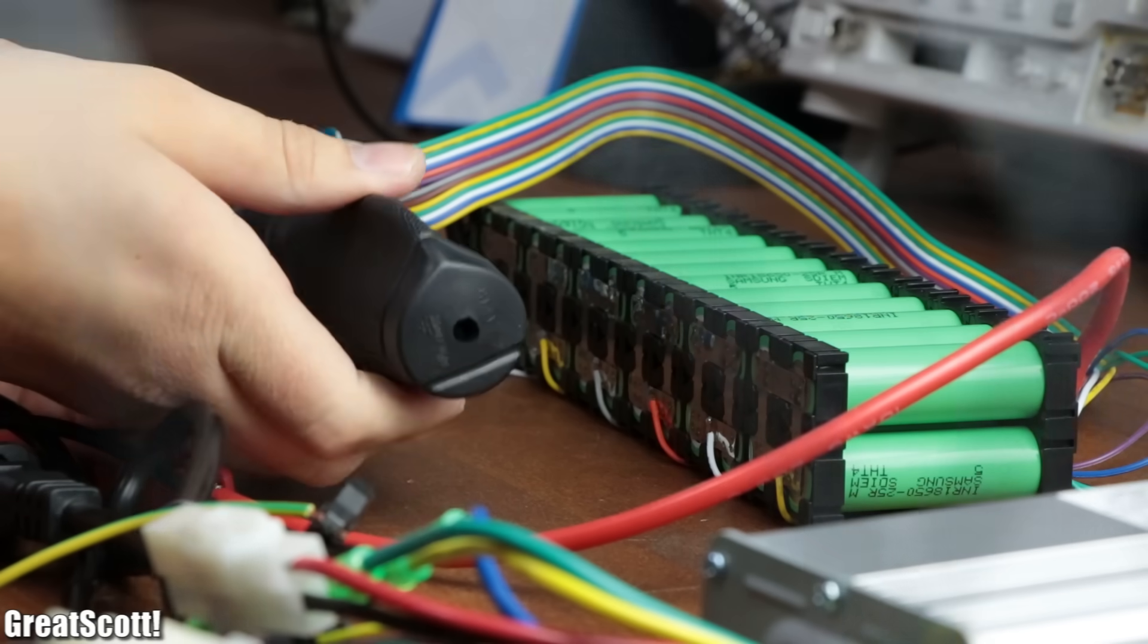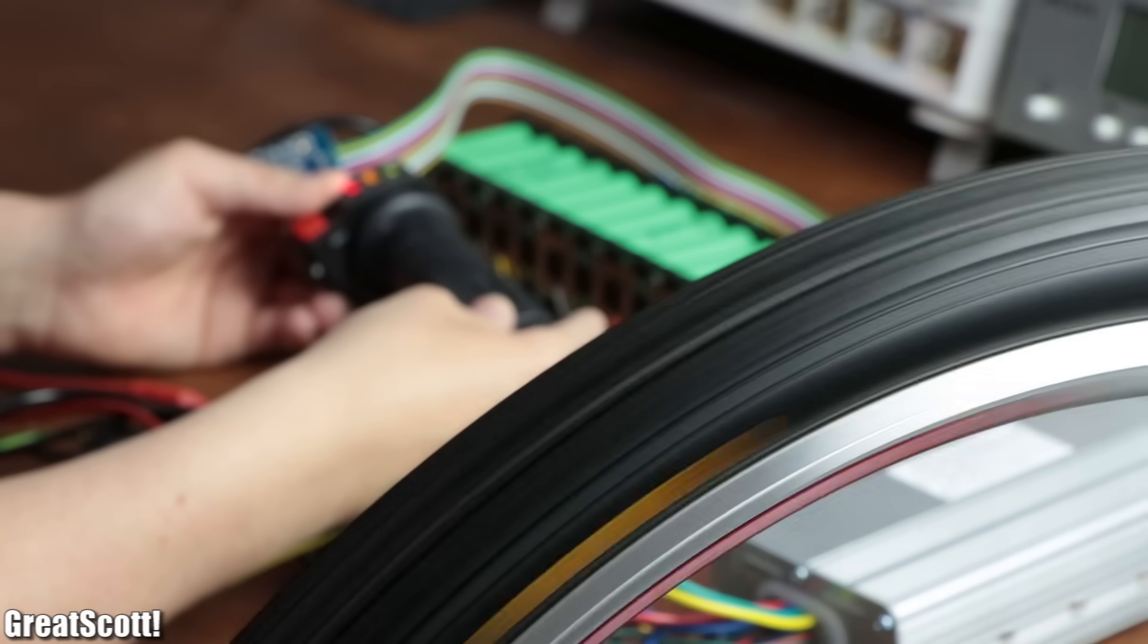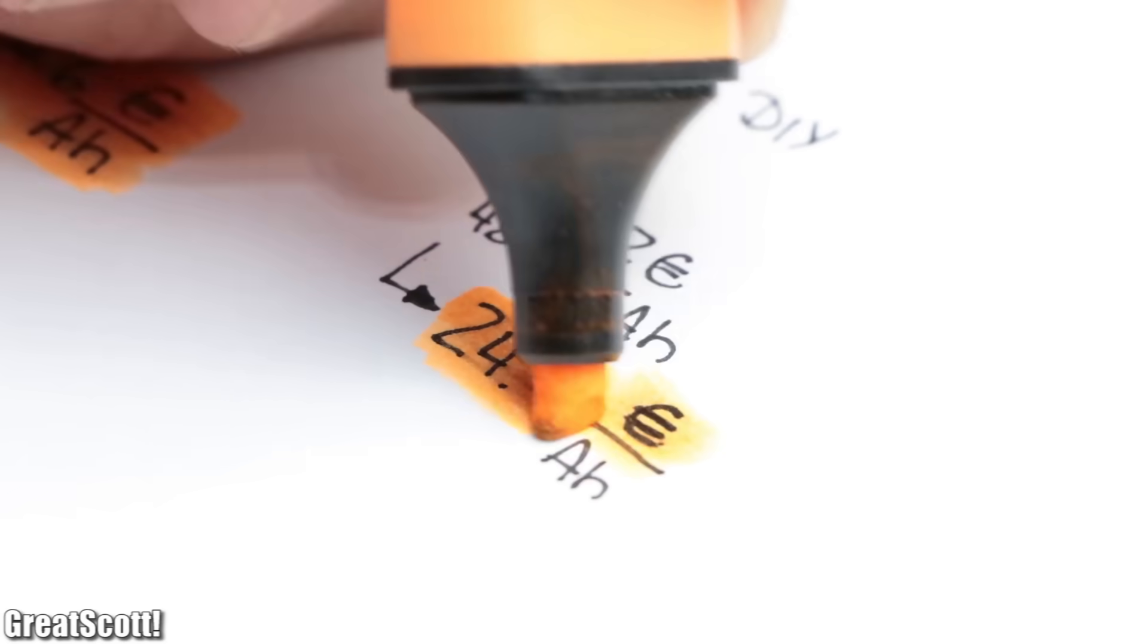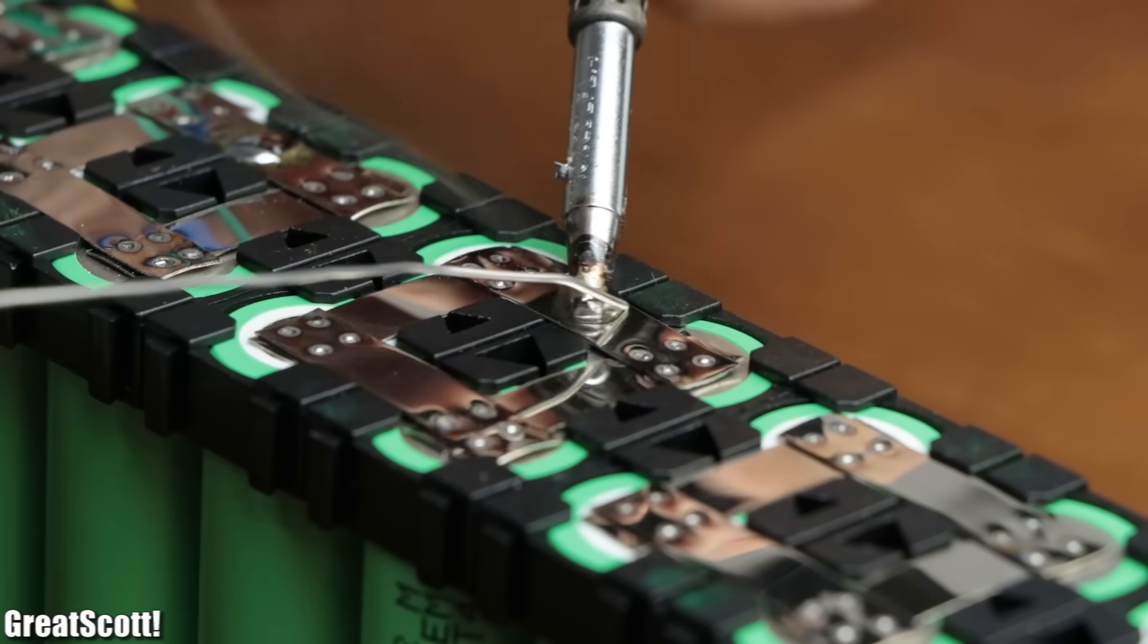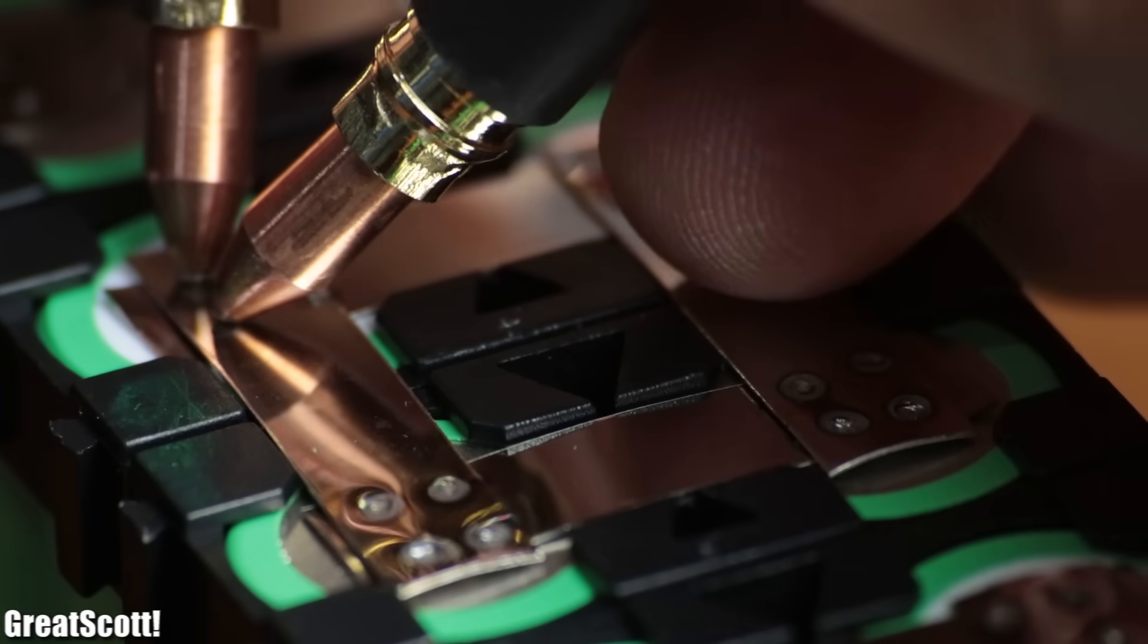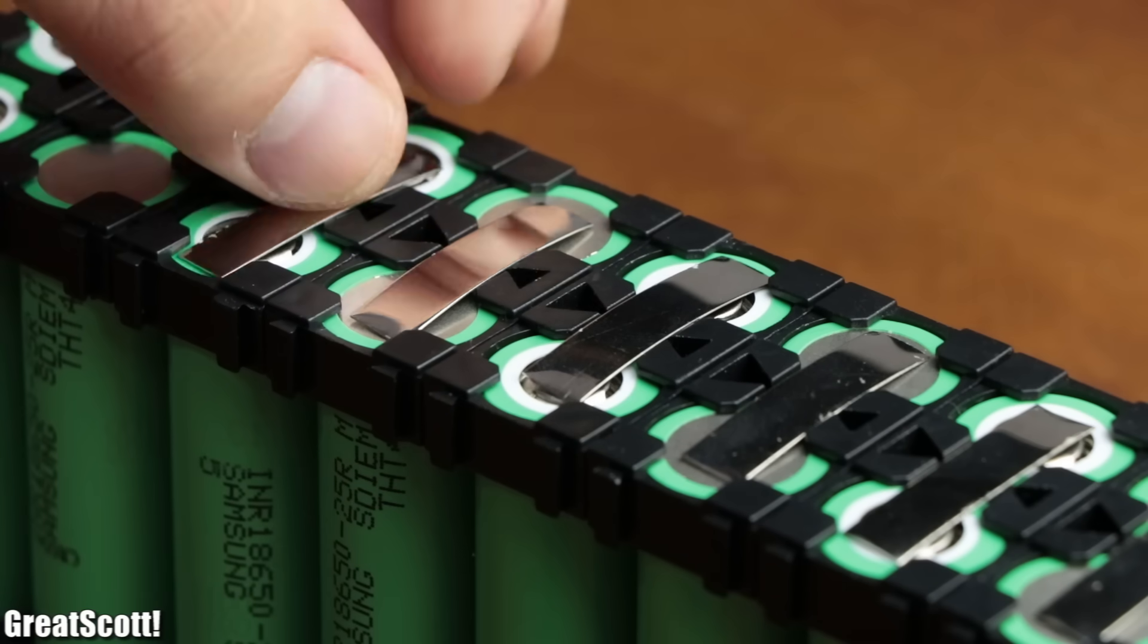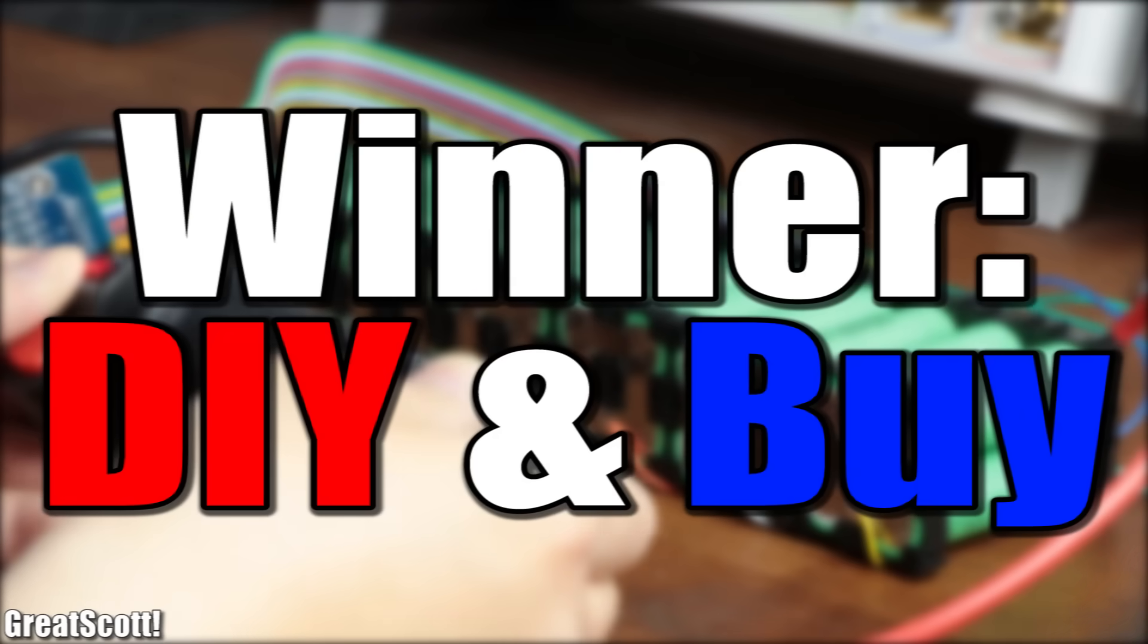But one question remains: was it cheaper? Well, according to eBay prices, it was in fact cheaper, but only a tiny bit. But then again, if you add labor costs and the cost of a battery spot welder, then it would only be cheaper if you plan to create more than just one battery pack and care for customization. So all in all, I hereby declare that both DIY and buy are the winner of this episode.